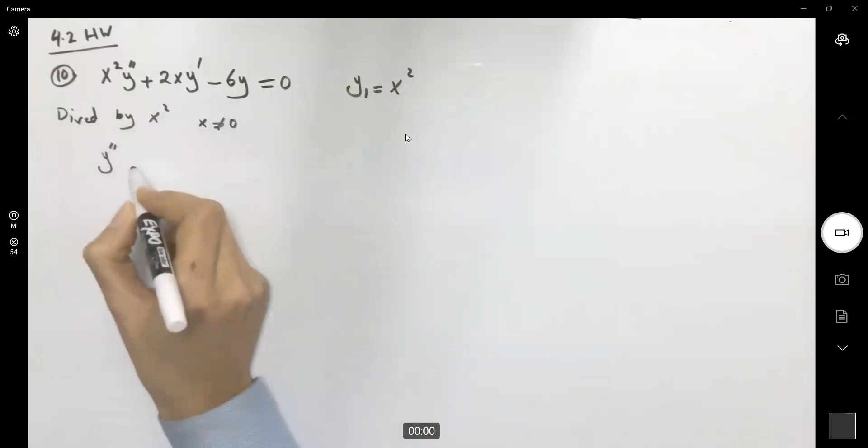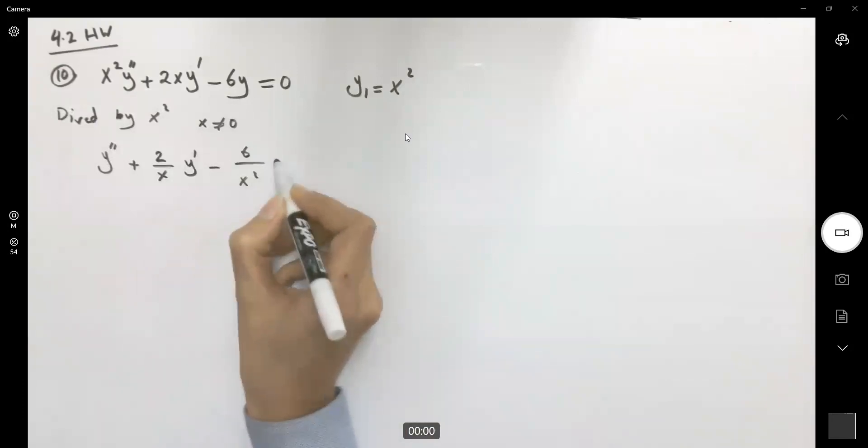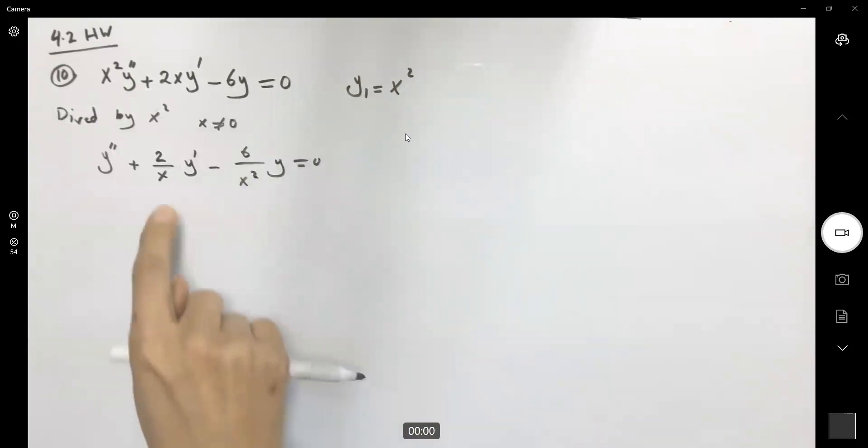So you get the second derivative of y plus 2 divided by x, y prime minus 6 divided by x squared y equal to zero. So as you can see, you have non-constant coefficients. So you cannot apply the auxiliary equation method.